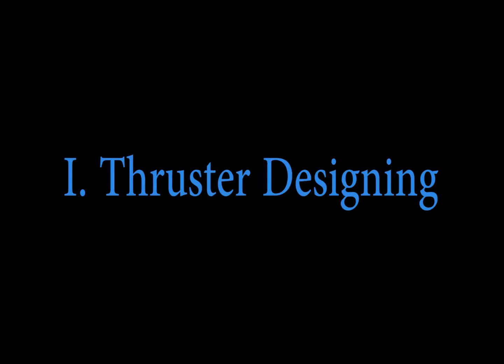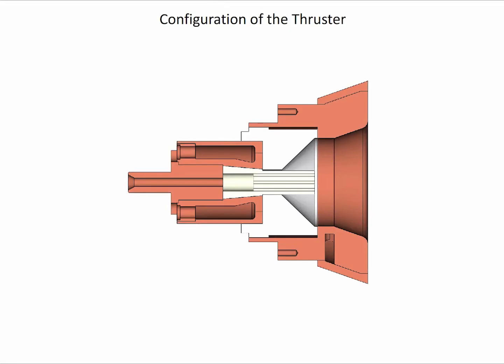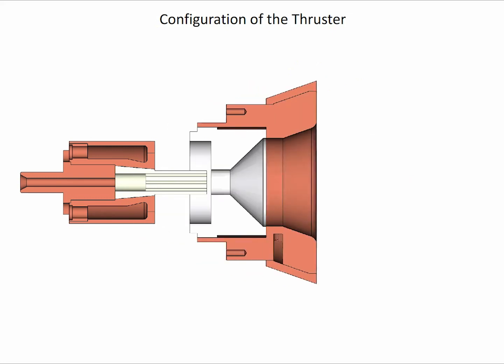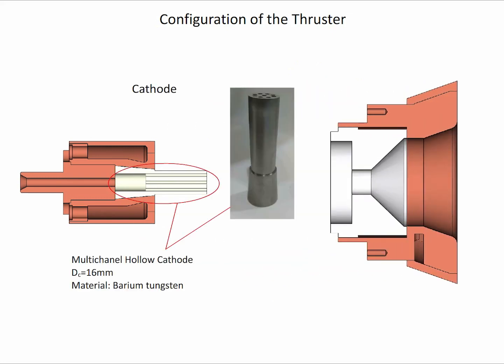Thruster Designing. The thruster mainly consists of anode, cathode, and insulator. The anode is made of copper with a cylinder-divergent nozzle, the minimum inner diameter of which is 60 mm. The cathode is built of tantalum-tungsten with nine propellant channels, the outer diameter of which is 16 mm.